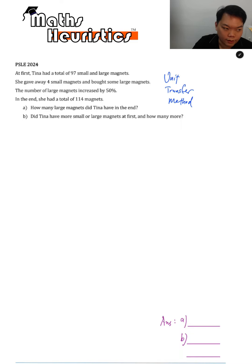So let's look at the problem. At first, Tina had a total of 97 small and large magnets. That is your before.